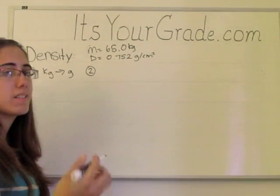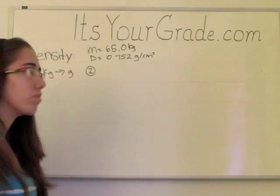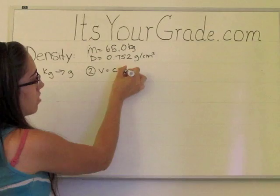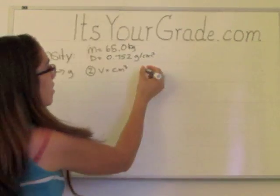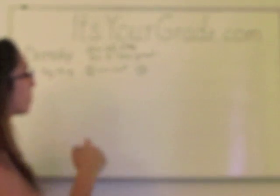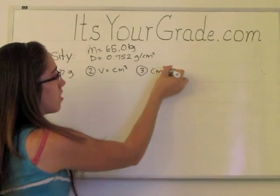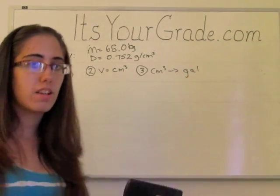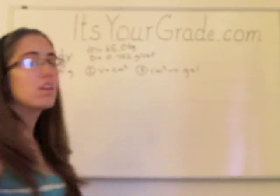In the second step we need to find what volume is. We have density, we have mass, so using density equals mass over volume, we can then find volume in centimeters cubed. In the third step I want to convert the centimeters cubed into gallons, because the gas in your gas tank, we know we go by the units gallons.